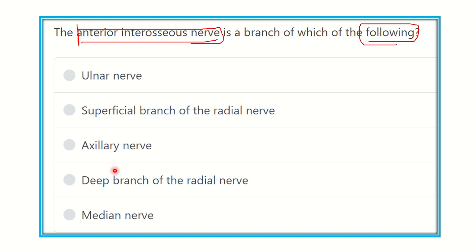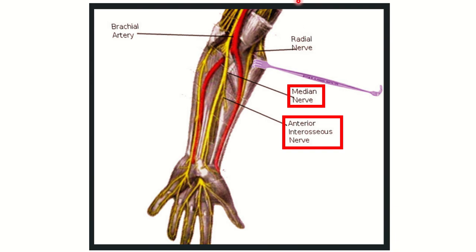We have to find out from which nerve the anterior interosseous nerve is derived. First of all, let's see some of the pictures. Here, we can see this nerve — this is the anterior interosseous nerve, and we can see it supplies the flexor aspect of the forearm muscles.